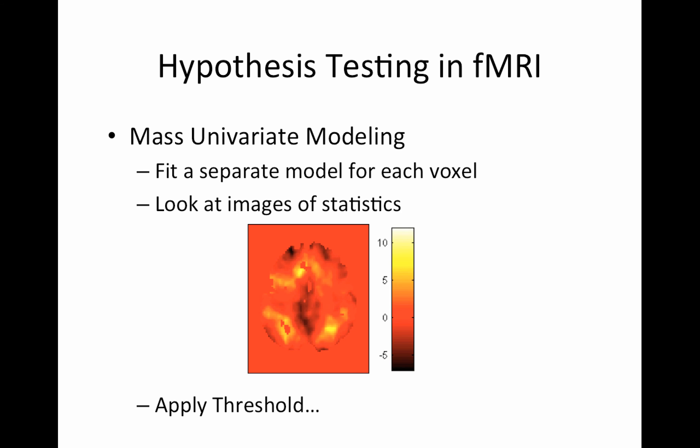Right, so hypothesis testing in fMRI. We've been all along using this mass univariate modeling approach. So every time I've presented anything I'm modeling, I'd say we're just doing this for a single voxel at a time, so you can ignore the fact that our data are actually in an image. Specifically, sometimes that's referred to as a bag of voxels. You just treat your data as a bag of voxels and go through and analyze each one separately.